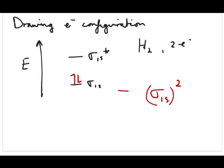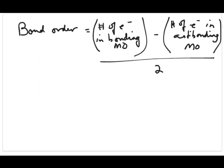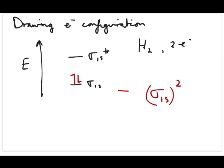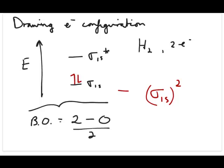There's one other very useful property to calculate: the bond order. Bond order is calculated by taking the number of electrons in the bonding MO, subtracting the number in the antibonding MO, and dividing by 2. For H2, that's 2 electrons in the bonding orbital minus 0 in the antibonding, divided by 2 — so the bond order is 1.0.